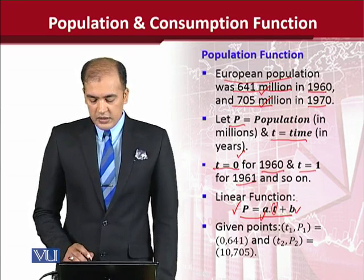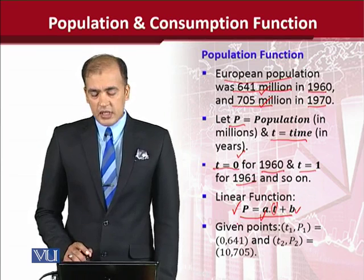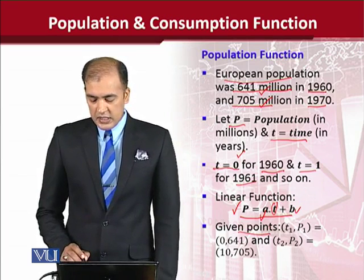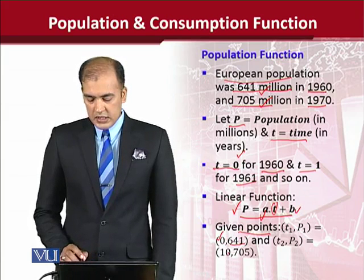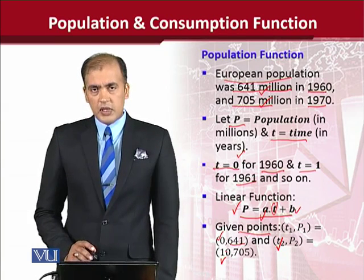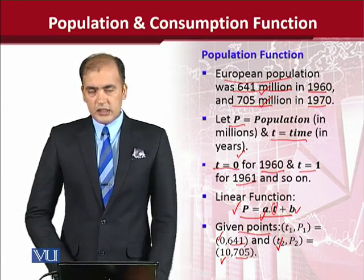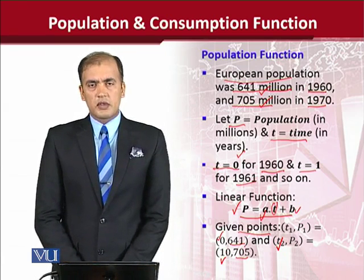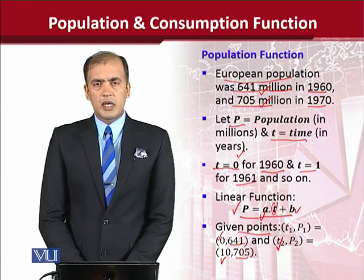From the data given, we extract two points: when time t was 0, the population was 641 units; and when time was 10 (i.e., the year 1970), the population was 705 units. These two points are used to calculate the slope.